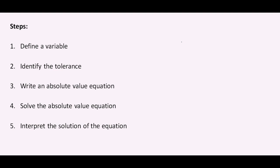Here are the general steps for word problems. With absolute values you want to identify the variable, but step two is more specific to absolute values, which is to identify the tolerance. Then we write an absolute value equation, solve it, and interpret the solution.